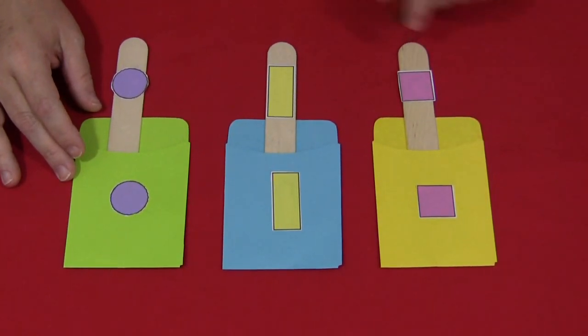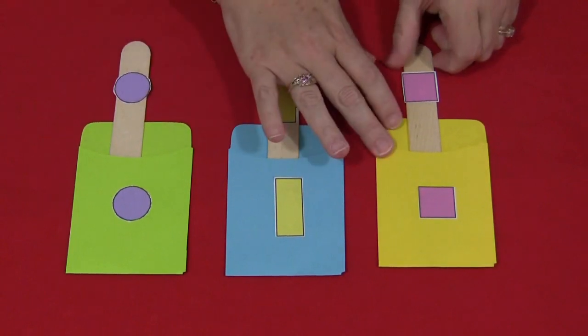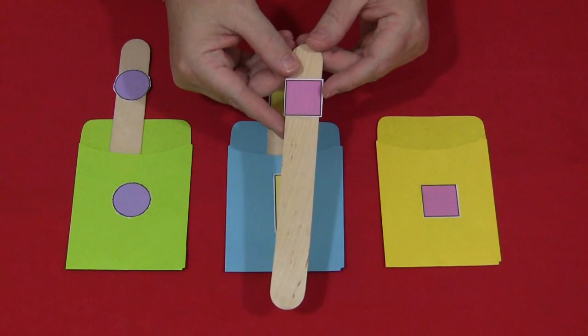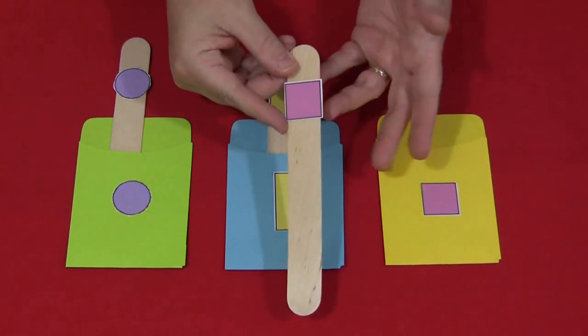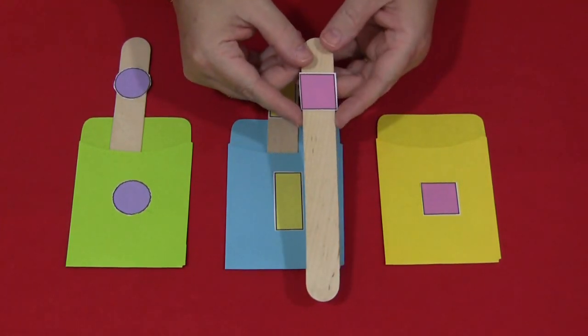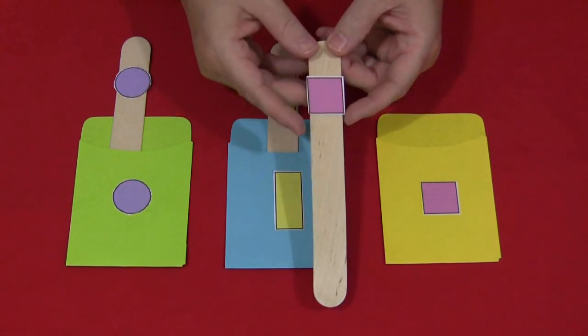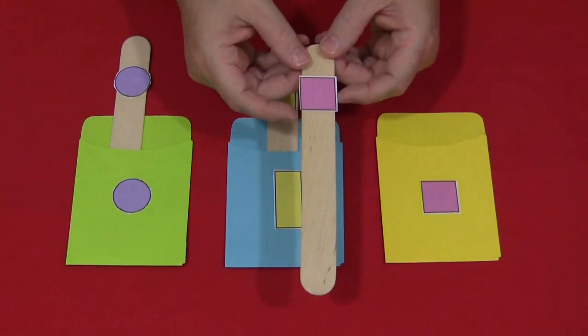You also need to have craft sticks and these are a little bit wider than your normal popsicle sticks. I know they sell some craft sticks about the size of popsicle sticks but you really want to use the ones that are called jumbo craft sticks because they're a little bit wider and you can do more with them.